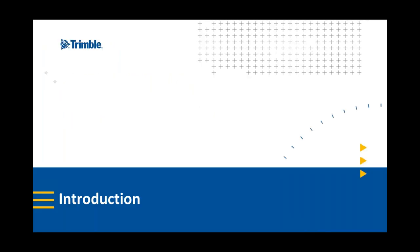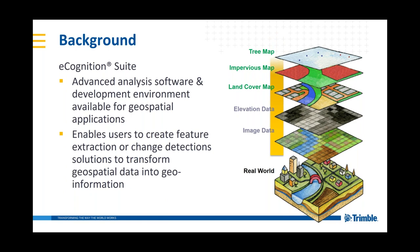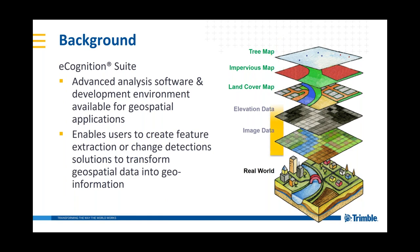That being said, we'll get into the introduction here and quickly get into the topic. Just some background: there may be some new eCognition users or people completely new to the software. We provide a development environment for geospatial applications. We can create what we call rule sets that are designed to solve our geospatial problems — this could be the interpretation of image data in combination with elevation data to create geospatial information, transforming it and supporting various features around vector data sets, and of course change detection.